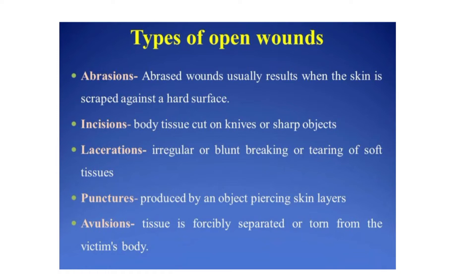Next is incision. Body tissues are cut by knives or sharp objects. Incisions are made surgically, like in an operation theater. For the patient's treatment and diagnostic purposes, the continuity of the skin is broken intentionally using sharp instruments such as scalpels and knives.